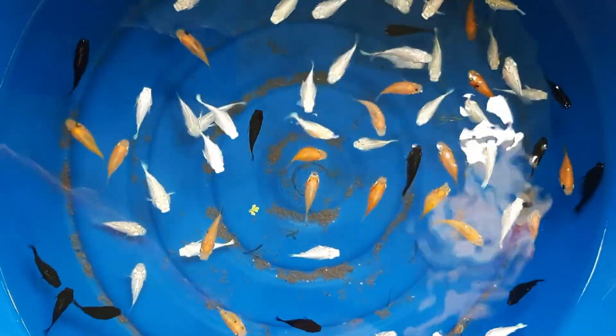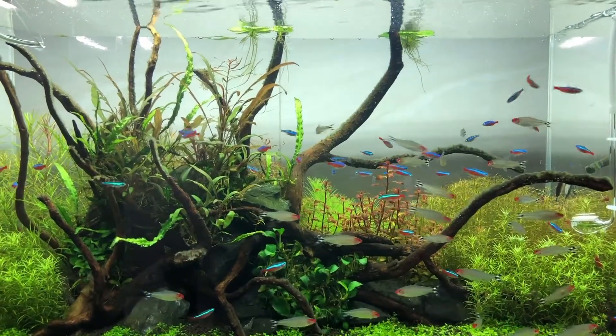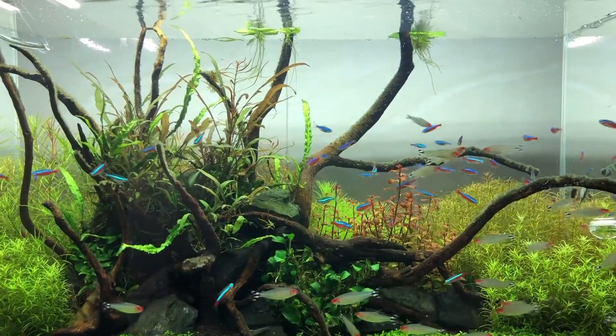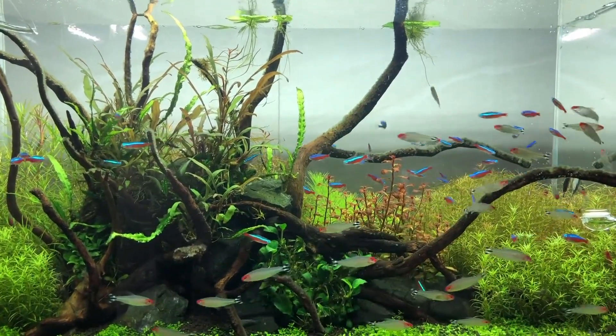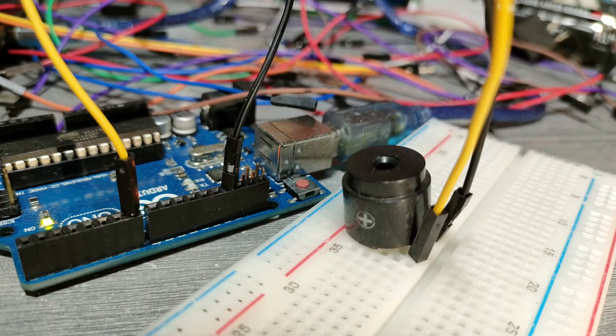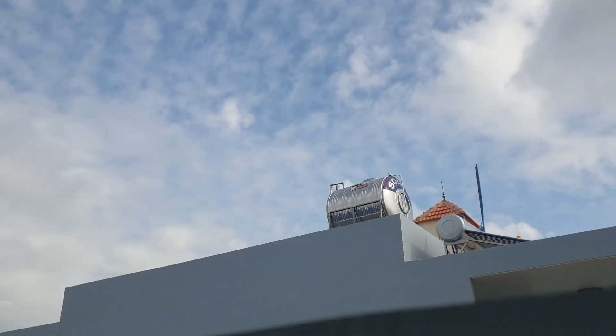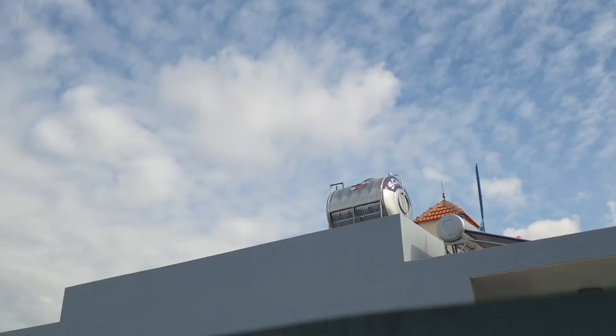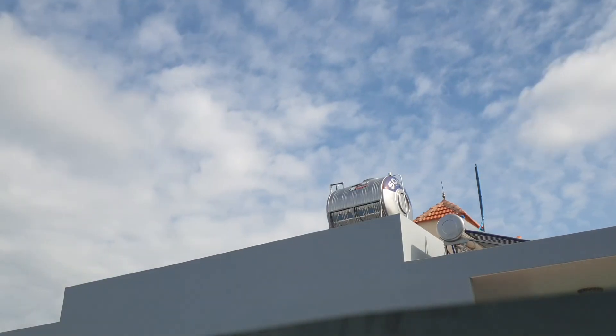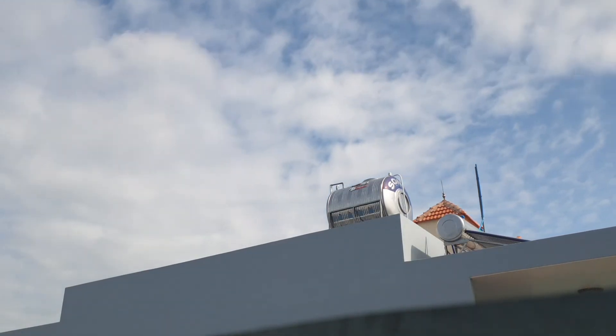We've just built a simple yet effective water level monitoring system using Arduino. This project can be extended in many ways, such as adding a buzzer or integrating it with an IoT platform to get notifications on your phone. If you enjoyed this video, don't forget to like, comment, and subscribe. Let us know in the comments what other projects you'd like to see. Thanks for watching and happy making!